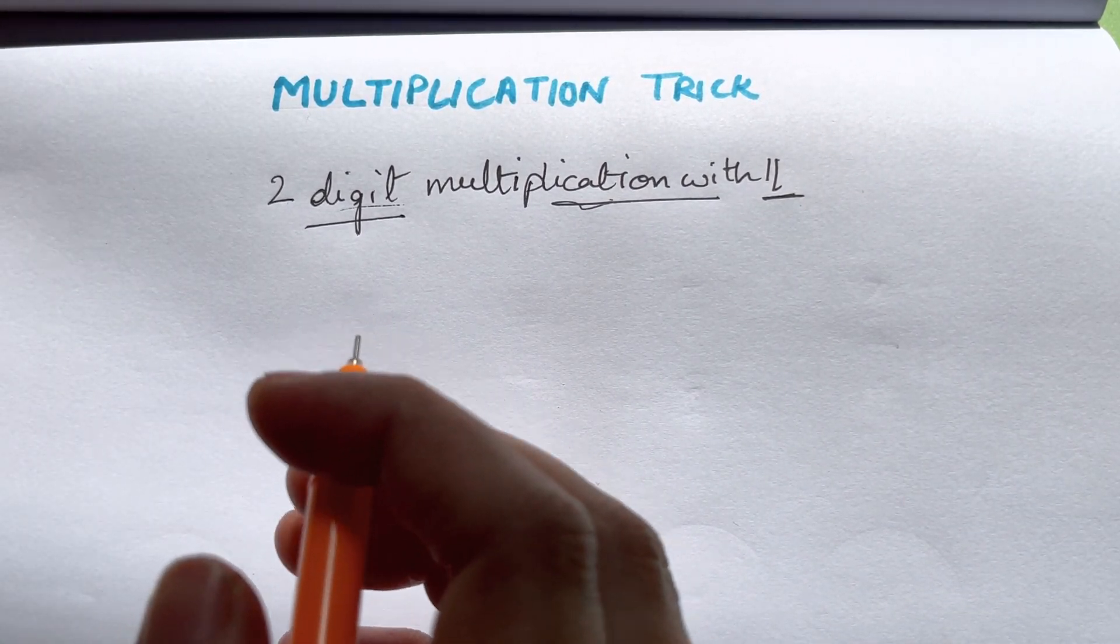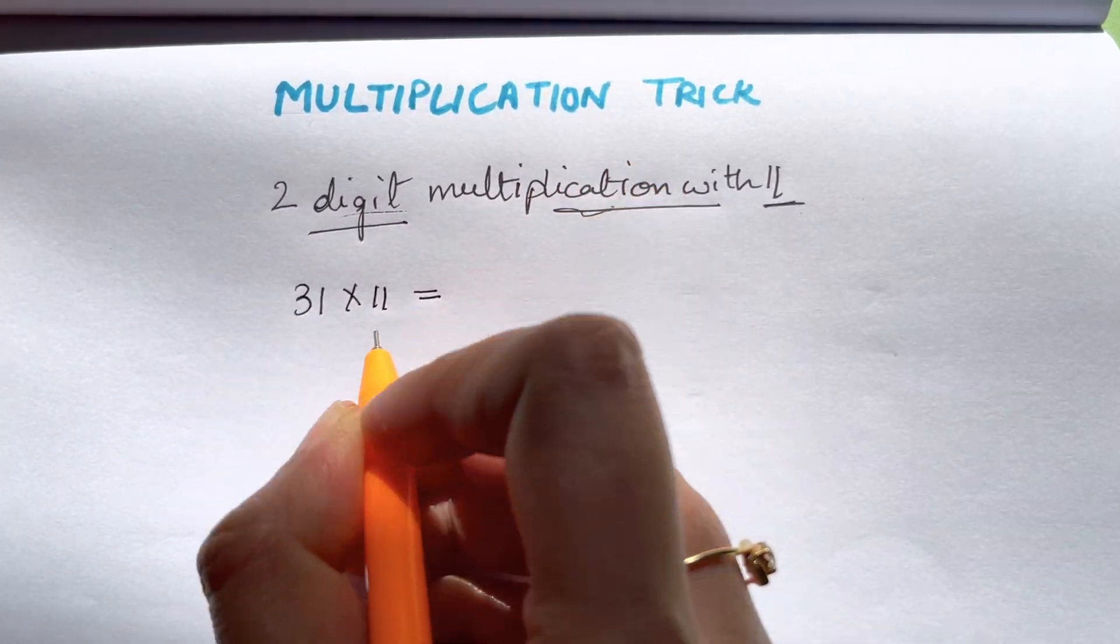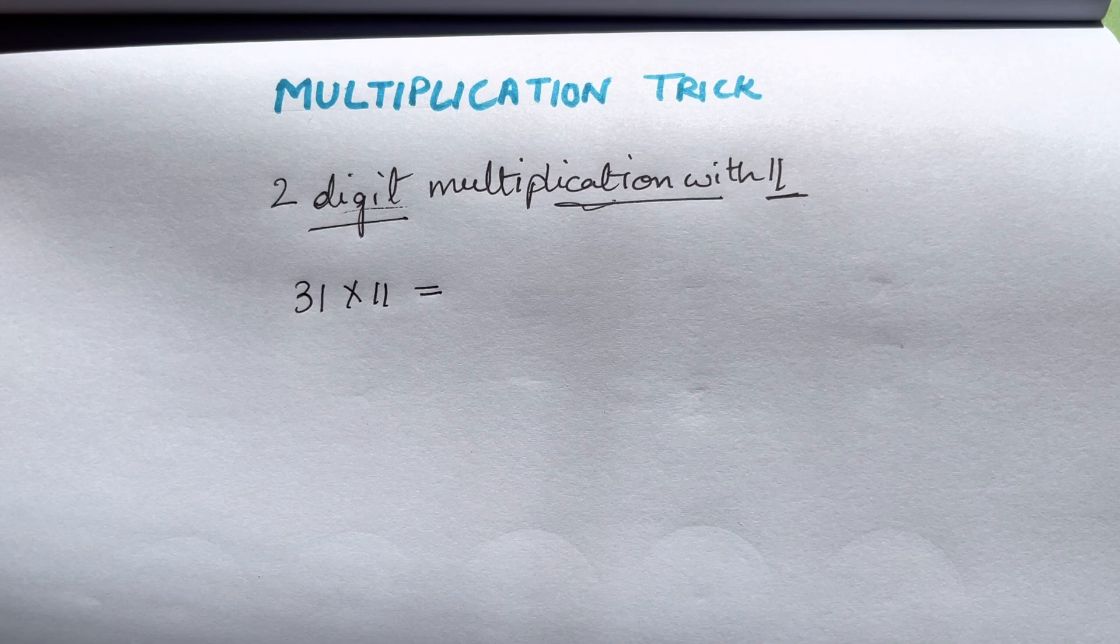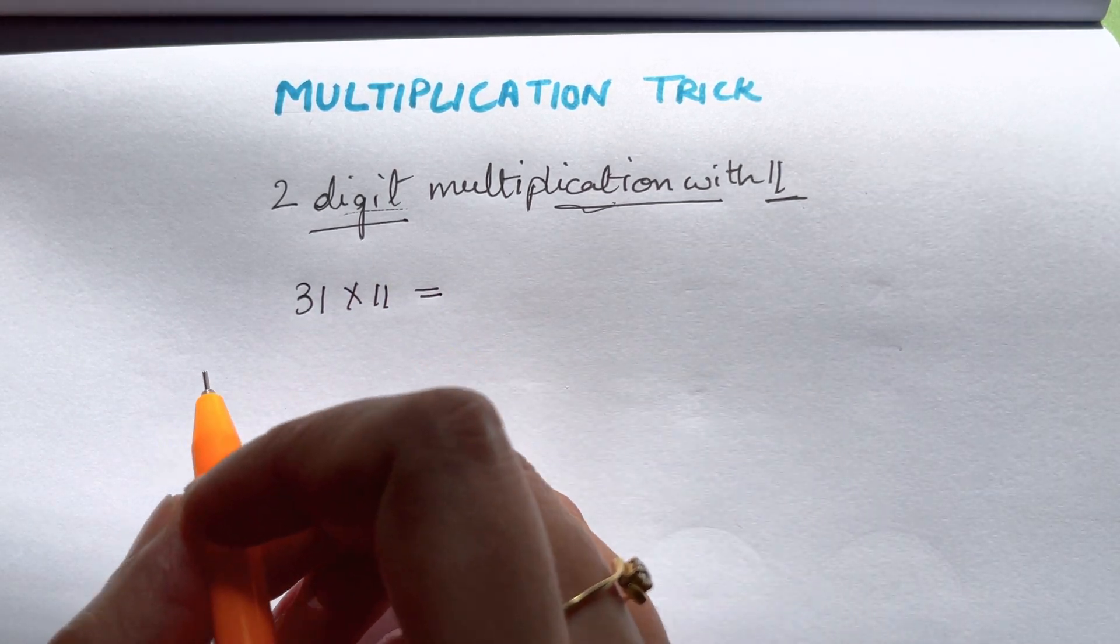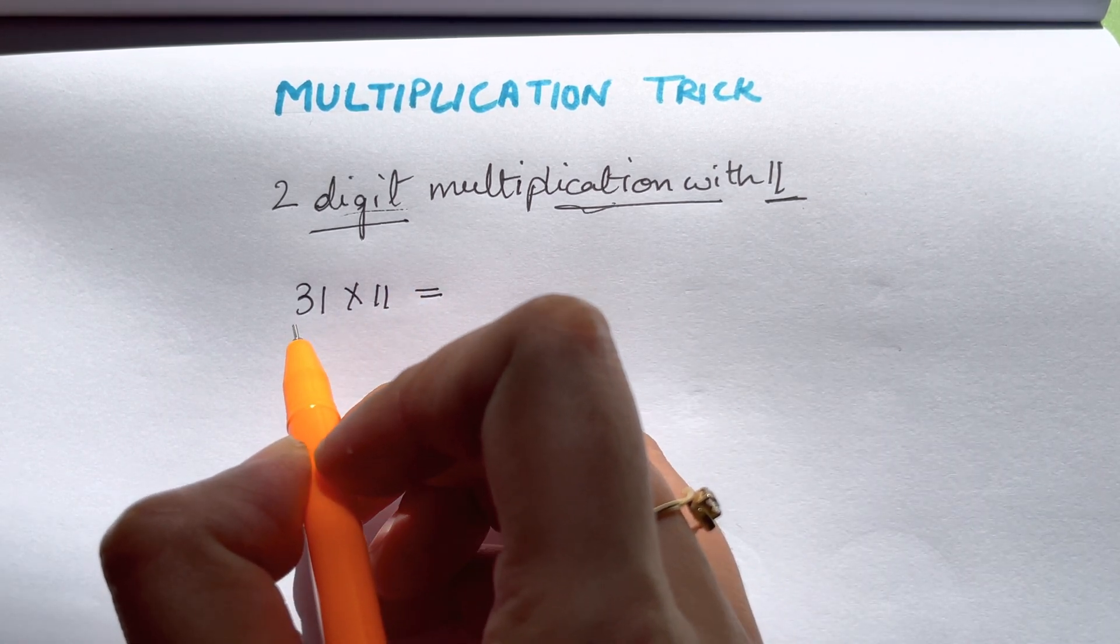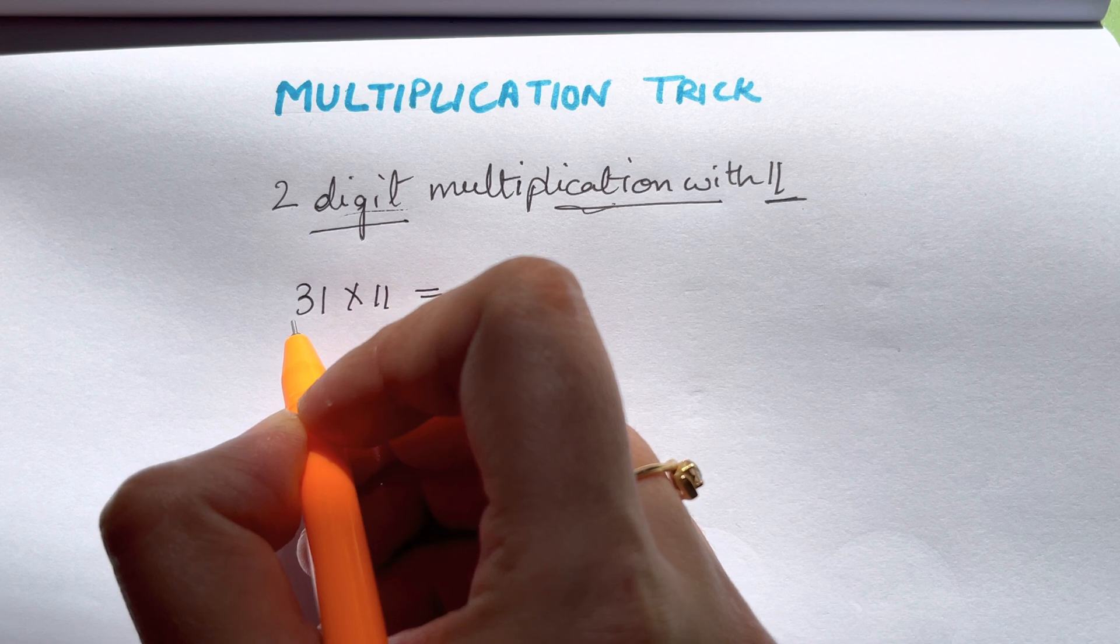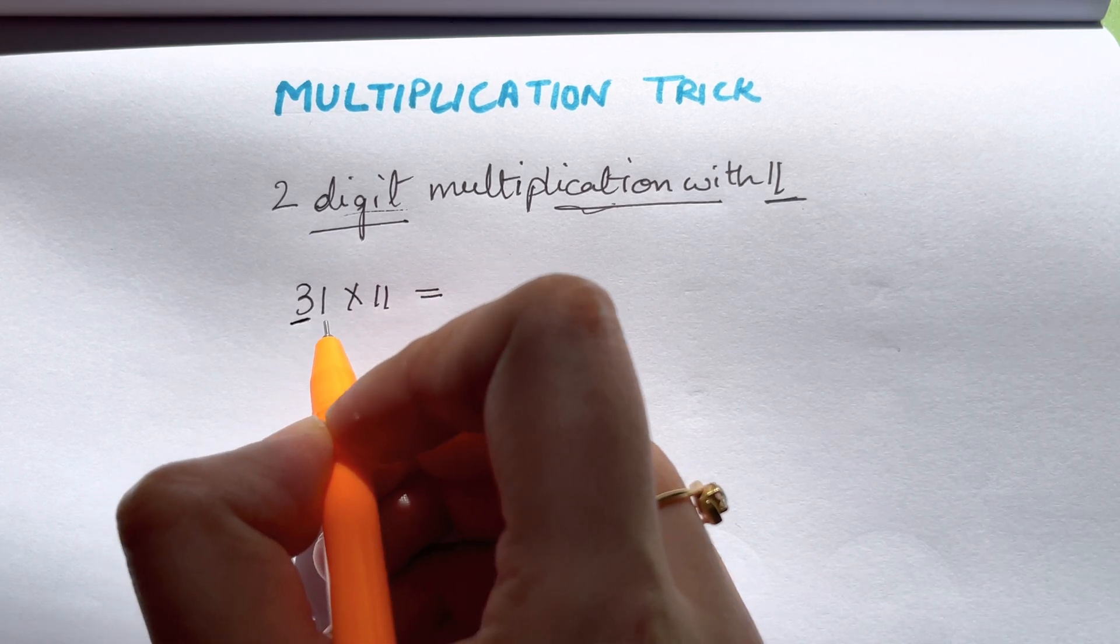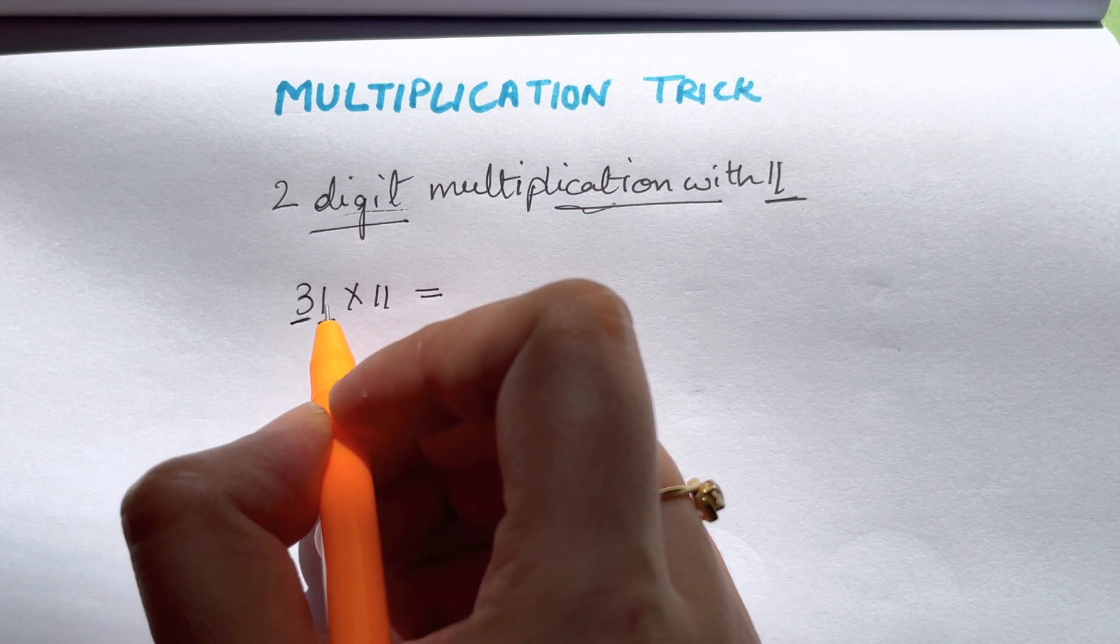Let me try out some examples like 31 times 11. After knowing this you'll be telling OMG why didn't we know this before. All you have to do whenever you multiply any number by 11 is take the first number and the last number.